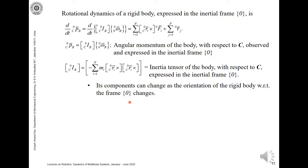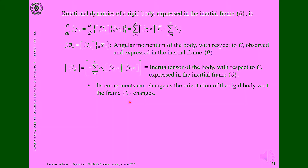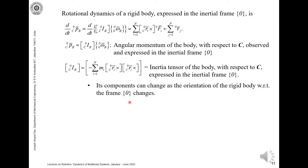The notable point is that the components of the inertia tensor expressed in frame 0 can change as the orientation of the rigid body with respect to frame 0 changes. So its components depend upon the orientation of the rigid body, and they need not be constant — as the rigid body changes its orientation, the components of this inertia tensor will also change.